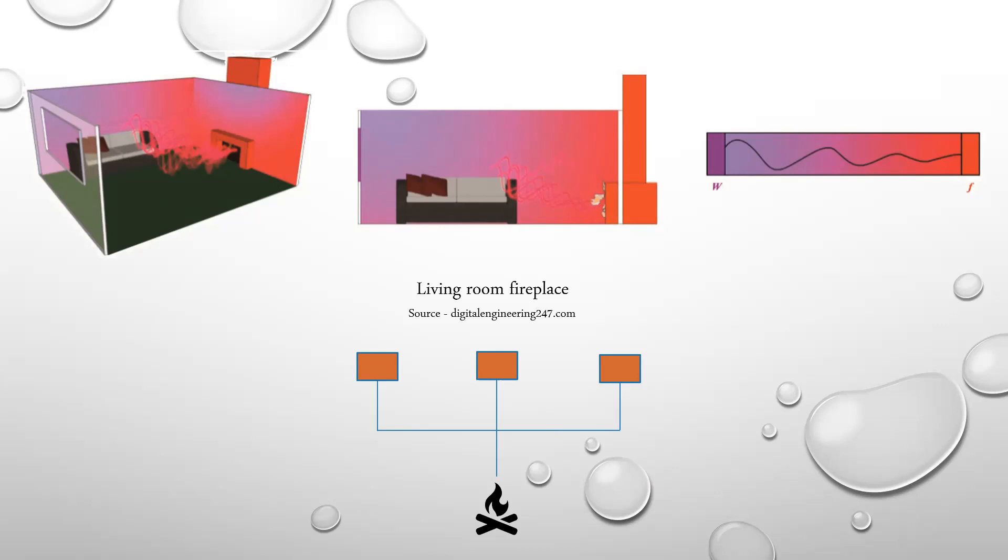Now we can further simplify the problem if we only would like to know the temperature distribution through the length of the room. Then we can reduce one more dimension and go down to just a one-dimensional simulation study. Here we will only take the length of the room into account and look at how the heat is being dissipated in one direction. That is why this is known as a 1D simulation, which is also shown here in the picture to the right.